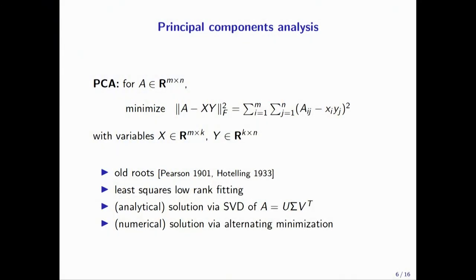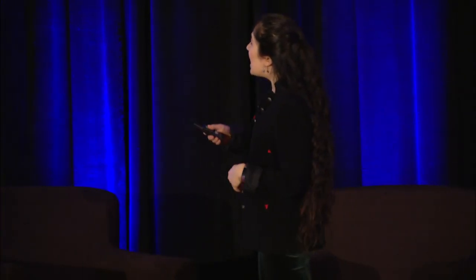The simplest example of a low rank model is principal components analysis. How many of you have seen PCA? Everyone knows principal components analysis — great. PCA is the problem of finding a low rank model for your data set A when your data set is a fully observed numeric matrix. What we mean by 'approximately equals' in the setting of PCA is we want the X times Y that's closest to A in the sense of squared error. My claim is that everyone knows PCA because people have been doing it for more than 100 years. And the reason they've been doing it is because there's an easy analytical solution using the singular value decomposition.